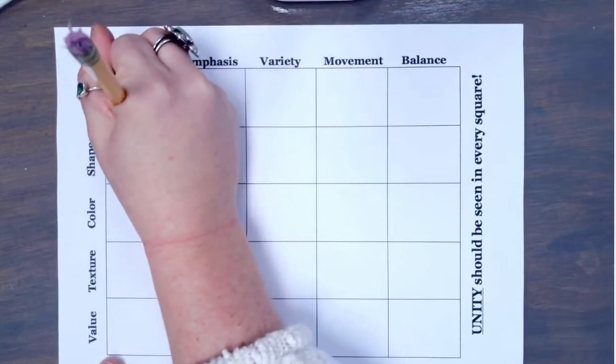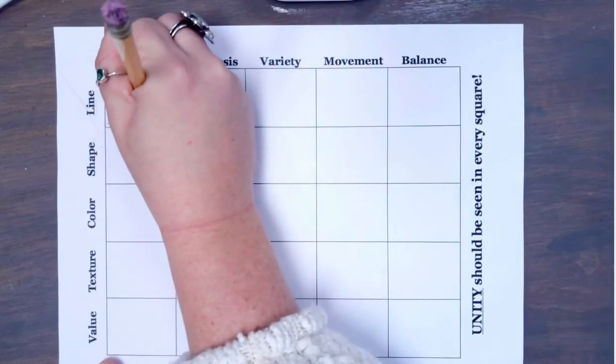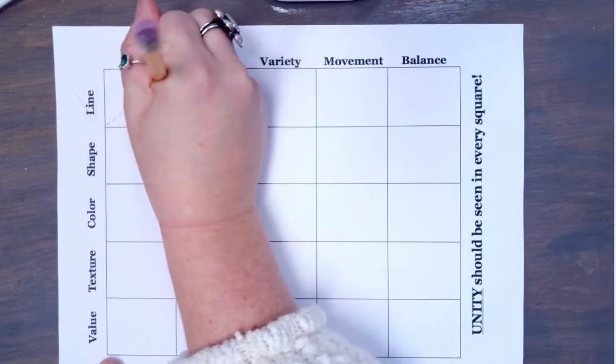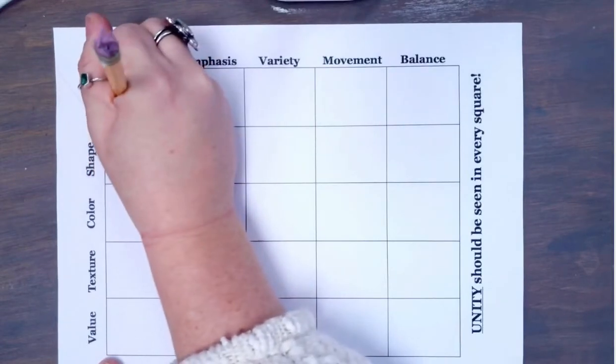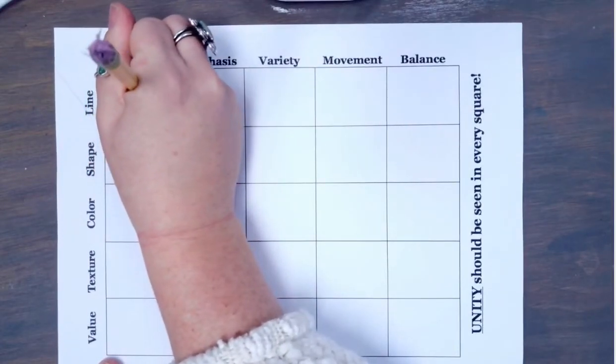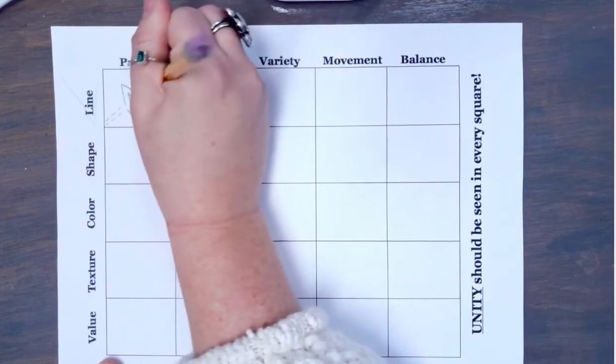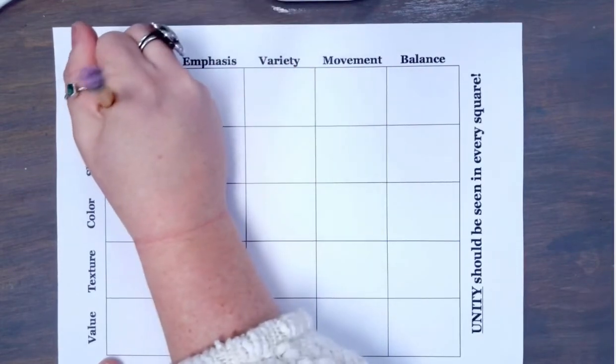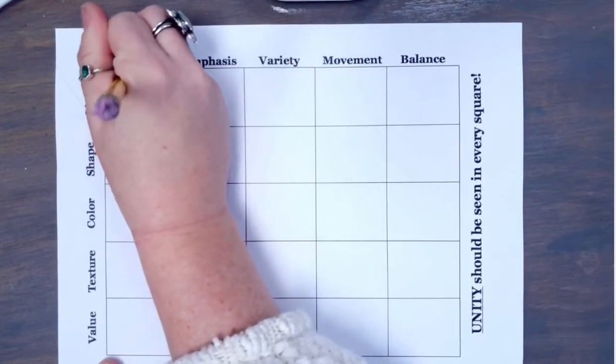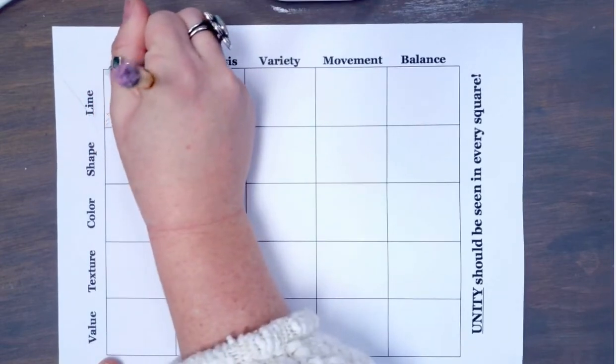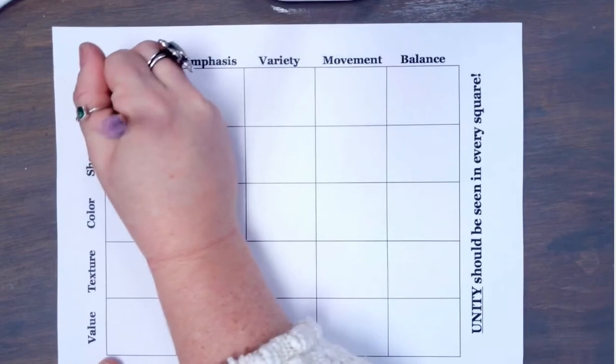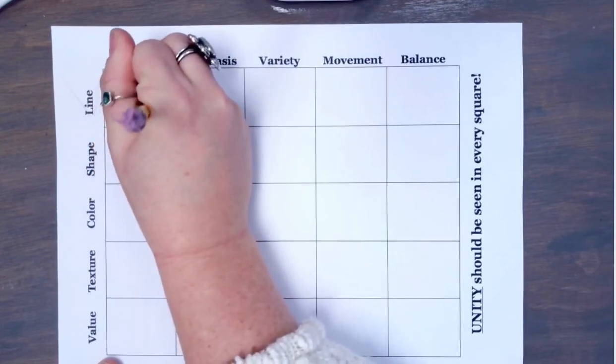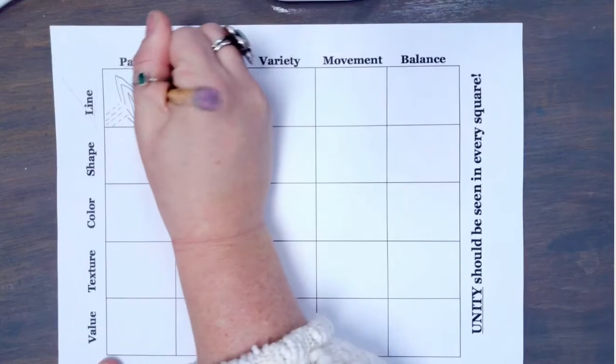So if we take a look at the first square in our matrix we'll see that line is on the left hand side and pattern is on the top. So that means that we are going to incorporate lines and patterns in our first square of our matrix. Think about how you can be unique and creative in each square of your matrix. I'm creating different dotted lines and zigzag lines to create a pattern within the first square.